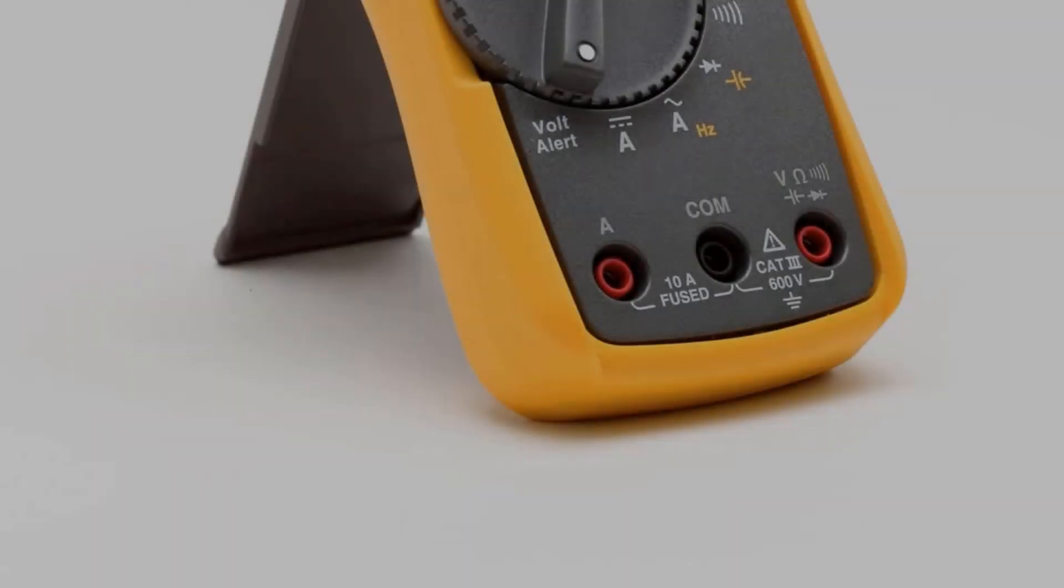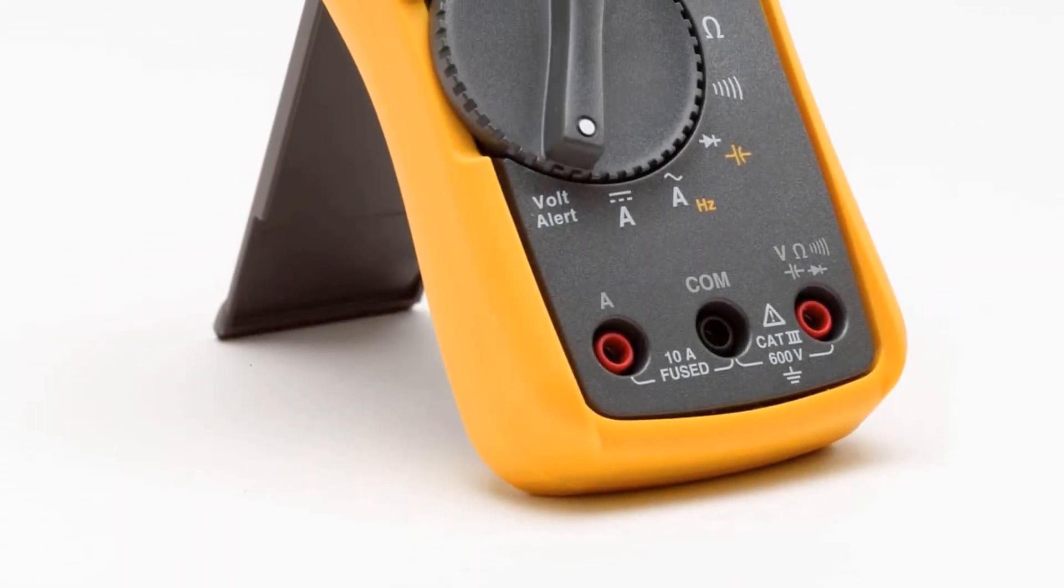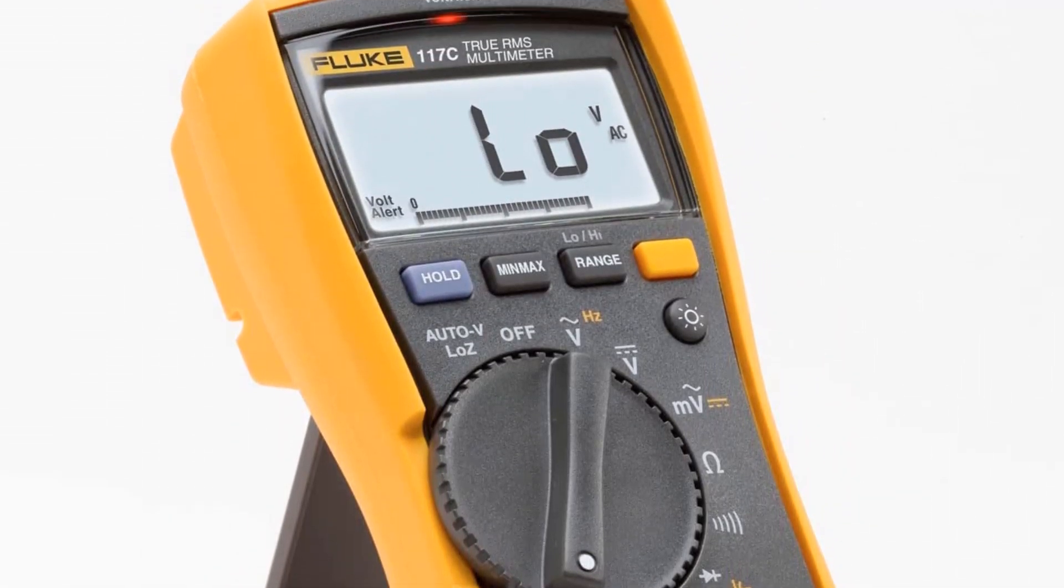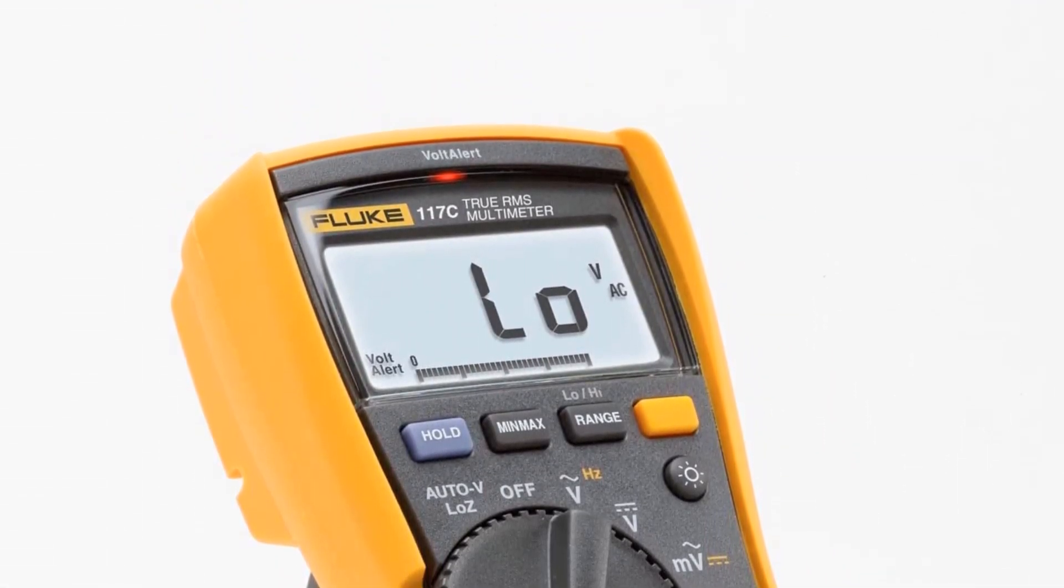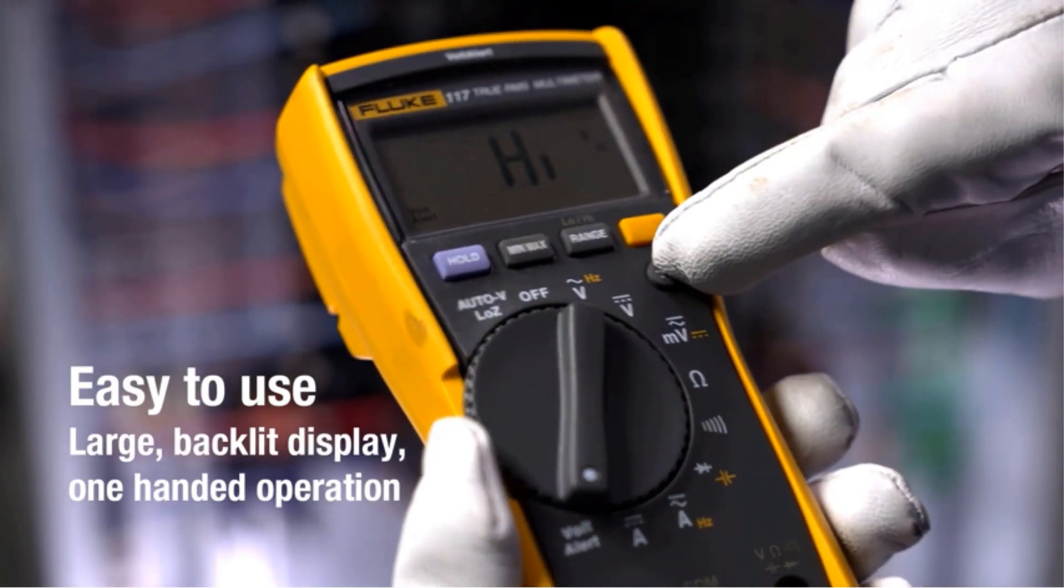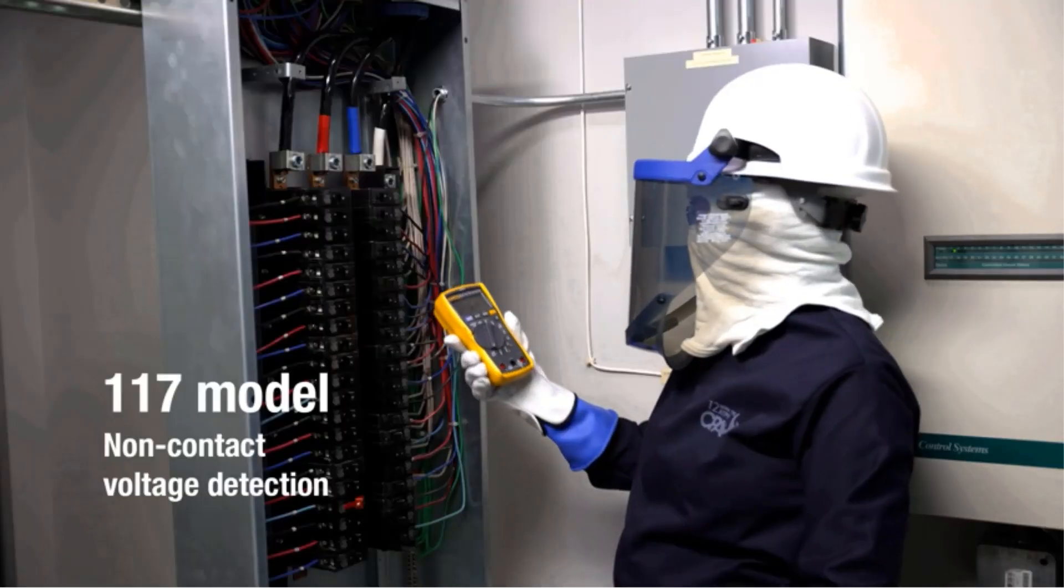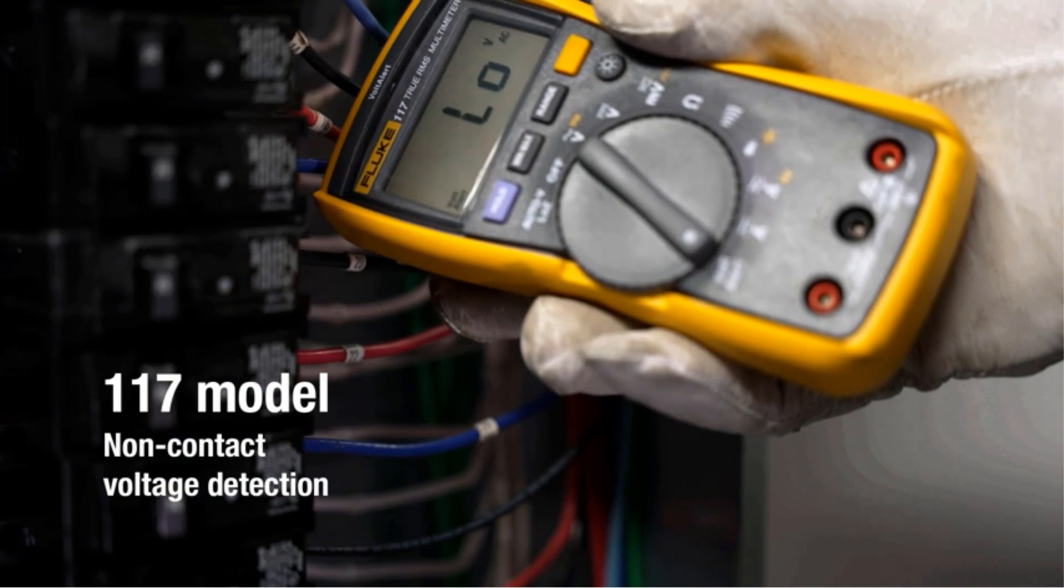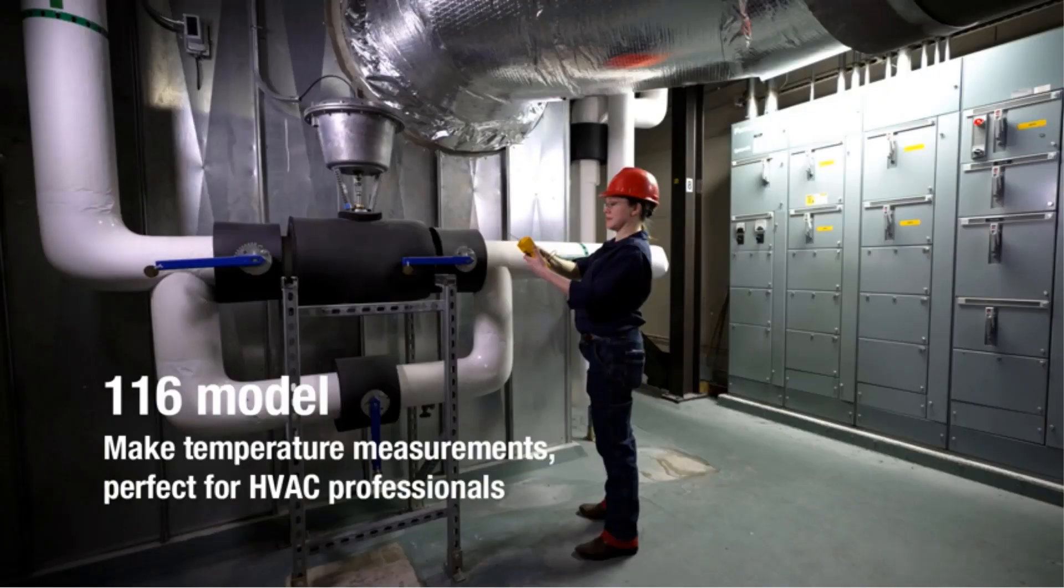With quick output and integrated non-contact voltage, you can provide premium accuracy while protecting yourself from powerful electrical events. For automatic AC/DC voltage selection, use AutoVolt to get you there faster. Working in dim lighting? No problem for this LED backlit display. Plus, you can couple it with a magnetic hanger and work hands-free.